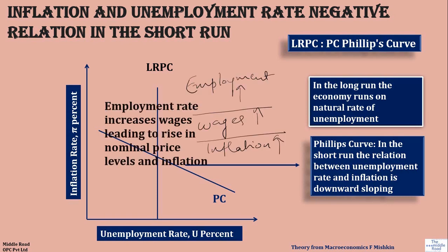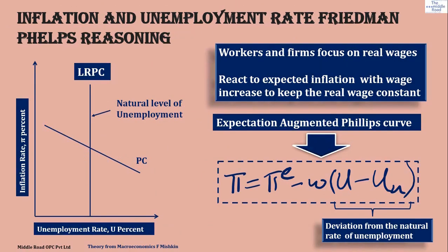The employment rate is inversely related to the unemployment rate. An important concept to look at here is the expectations-augmented Phillips Curve, proposed by Friedman and Phelps — also known as Milton Friedman's reasoning. What's very interesting is that when looking at workers and firms, there was a lacuna in the original theory: firms actually focus more on real wages and react to expected inflation.